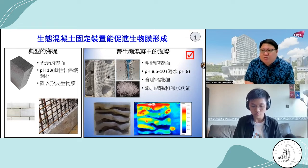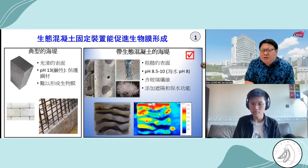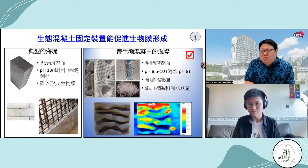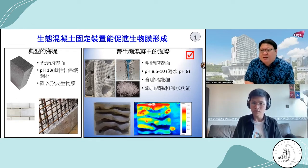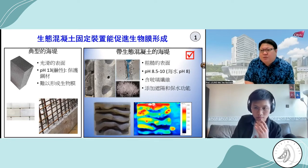On top of that, we also add some dredged sediment, which is also regarded as waste. In this case, we can turn waste into useful material. At the same time, we reduce the use of concrete and cement. When we produce cement, we have to use lots of energy, so by reducing the amount of cement used, we can also cut down the carbon footprint.